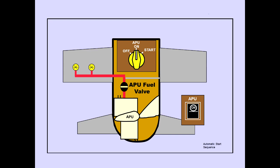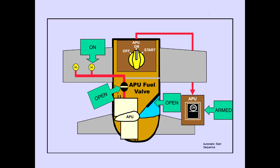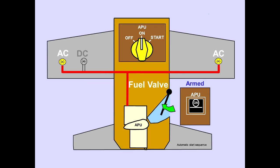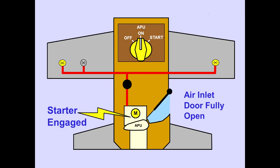The automatic start sequence activates the DC fuel pump, opens the APU fuel valve and air inlet door, and arms the APU bleed air valve. When AC power is available, the number two aft main tank AC fuel pump and the number three aft main tank AC fuel pump supply fuel to the APU. When the air inlet door is fully open, the starter motor engages and the APU engine start sequence begins.